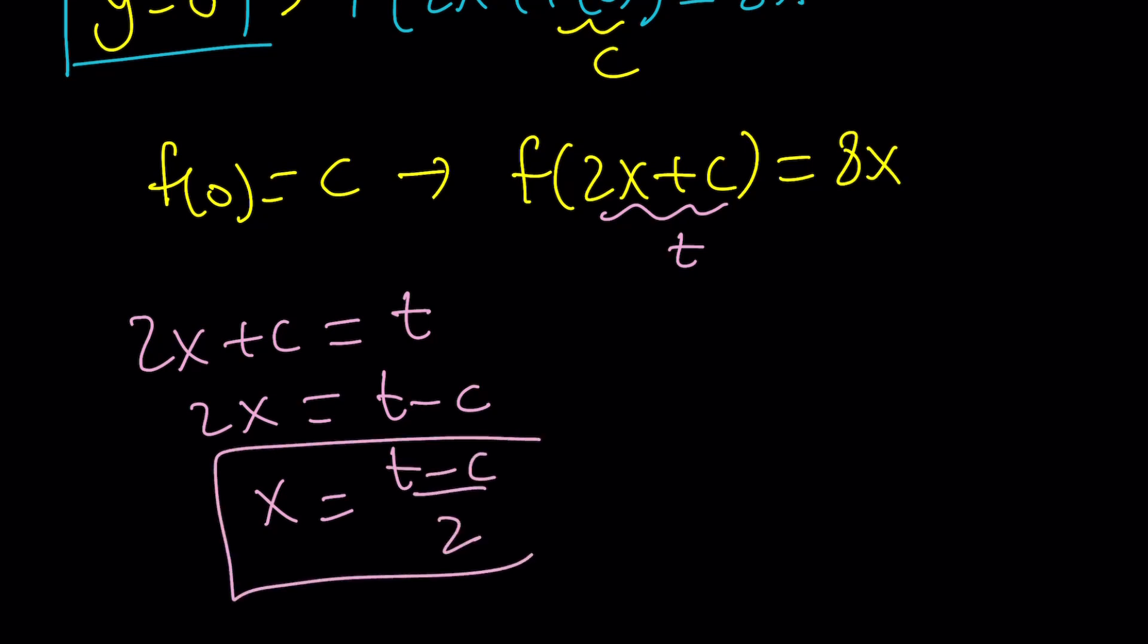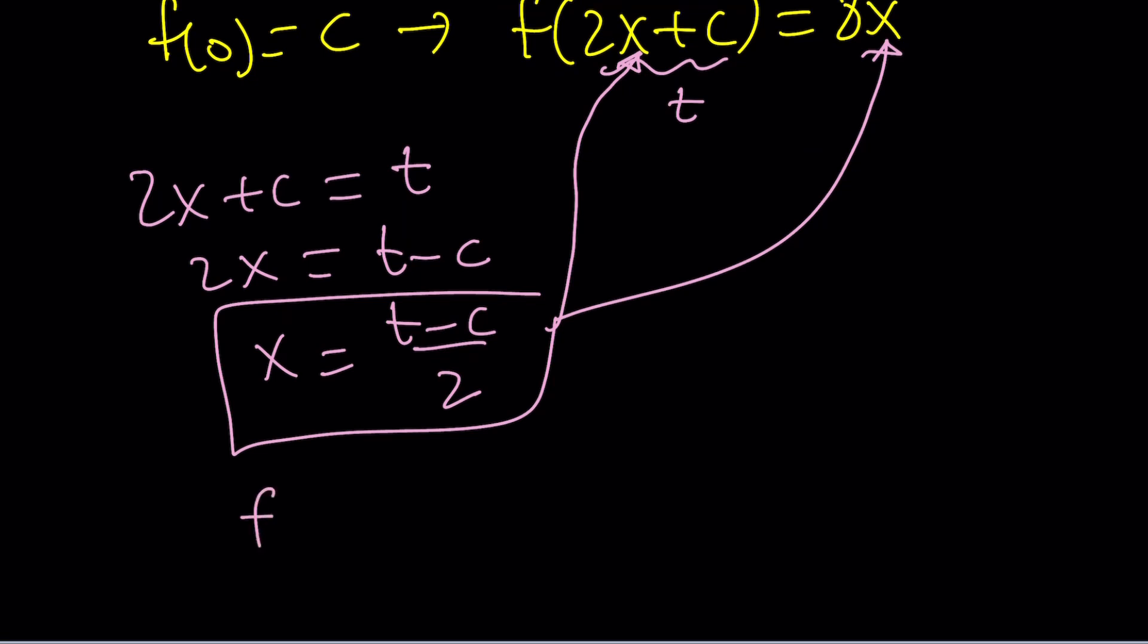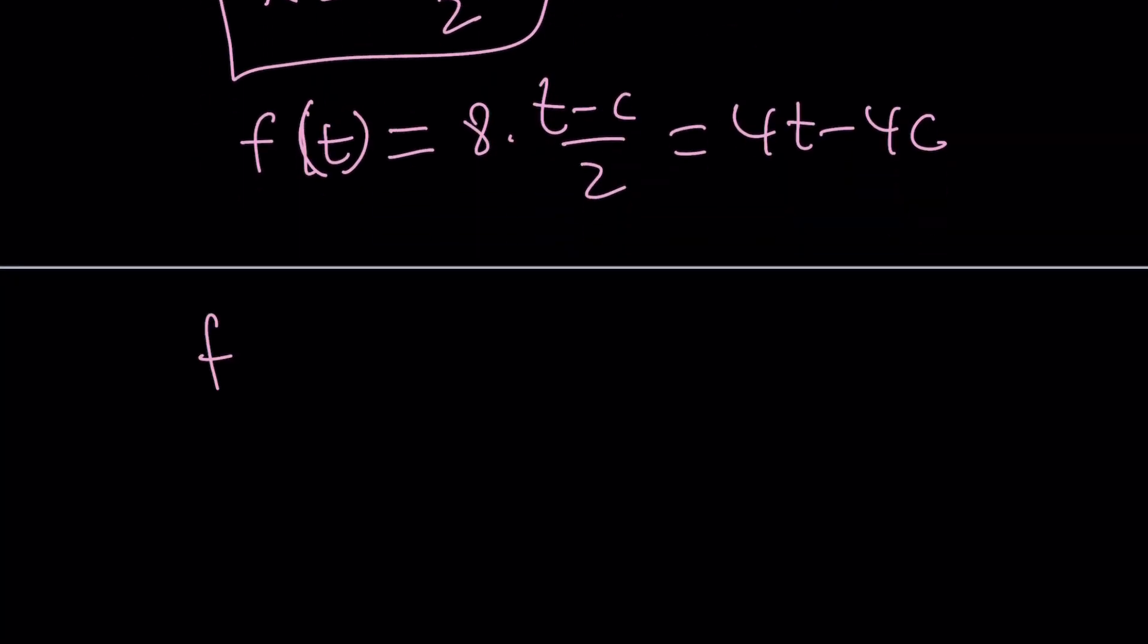So, that's what I need to replace x with to get f of t inside the parentheses. But, of course, you have to do it on both sides. So, that's going to give you f of t because that's what we get on the left. Equals 8 times t minus c divided by 2, which is 4t minus 4c. So, f of t can be written as 4t minus 4c. But now, I have the freedom so I can replace t with x just to express my function in terms of x. I can use any variable. Because we use x and then we discard it and we use another x.